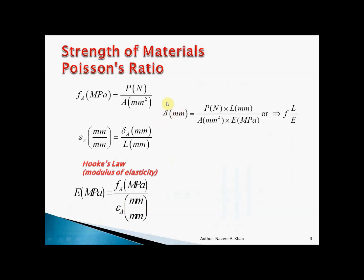The deformation formula is: deformation equals load times actual length divided by cross-sectional area multiplied by the modulus of elasticity, giving a result in millimeters. Looking at the units, newtons divided by millimeters squared is MPa, which cancels with E, leaving millimeters. This formula is equivalent to stress times length divided by E.